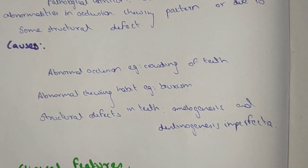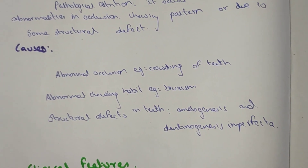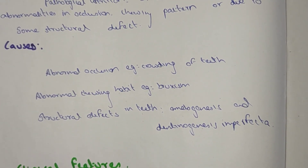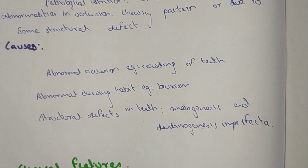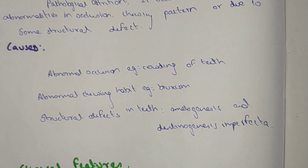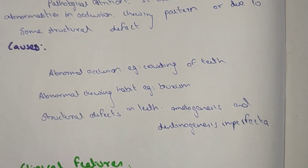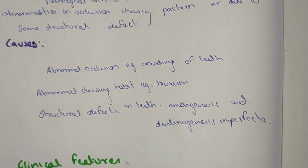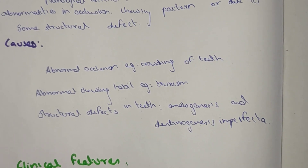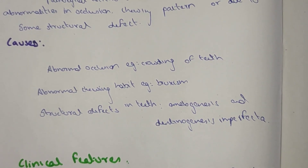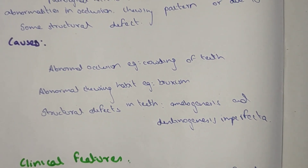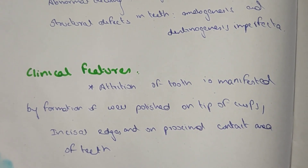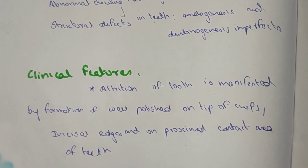Causes of attrition include abnormal occlusion such as crowding of the teeth, abnormal chewing habits such as bruxism — where children grind their teeth at night — and structural defects such as amelogenesis imperfecta and dentinogenesis imperfecta.